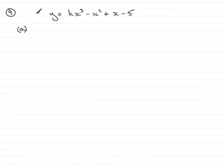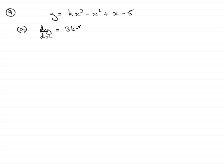Now in question 9, we're told that we have a curve C with the equation y equals kx cubed minus x squared plus x minus 5. For part A, we've got to find dy by dx. Differentiating each term in the normal way: the first term differentiated would be 3kx squared, the second term would be minus 2x, third term plus 1, and the constant differentiates to 0. So that gives us dy/dx for part A.